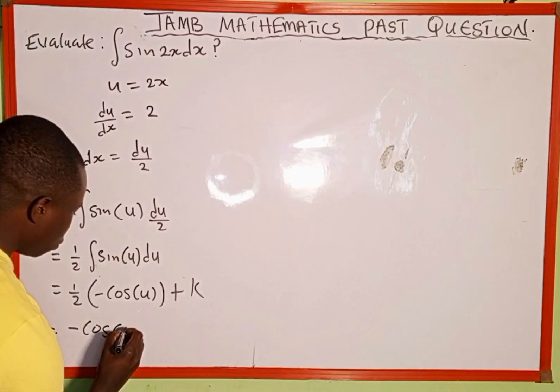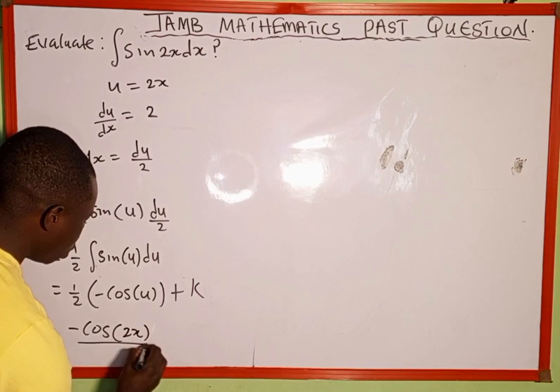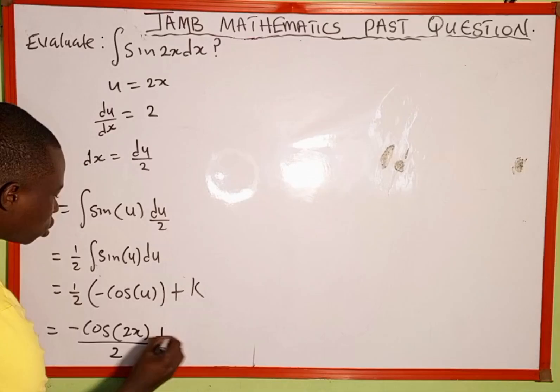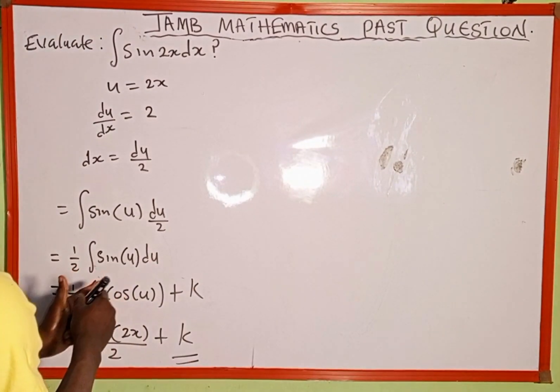So we're going to replace it back. This is going to be negative cosine of 2x, then everything all over 2, plus the integration constant. This constant here we can use C or K, depending on the one in the options.